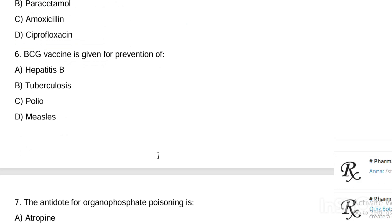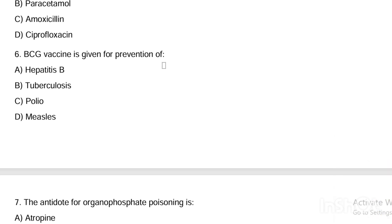Next question. BCG vaccine is given for prevention of: Option A, hepatitis B. Option B, tuberculosis. Option C, polio. Option D, measles. Answer is Option B — BCG vaccine is given for tuberculosis.